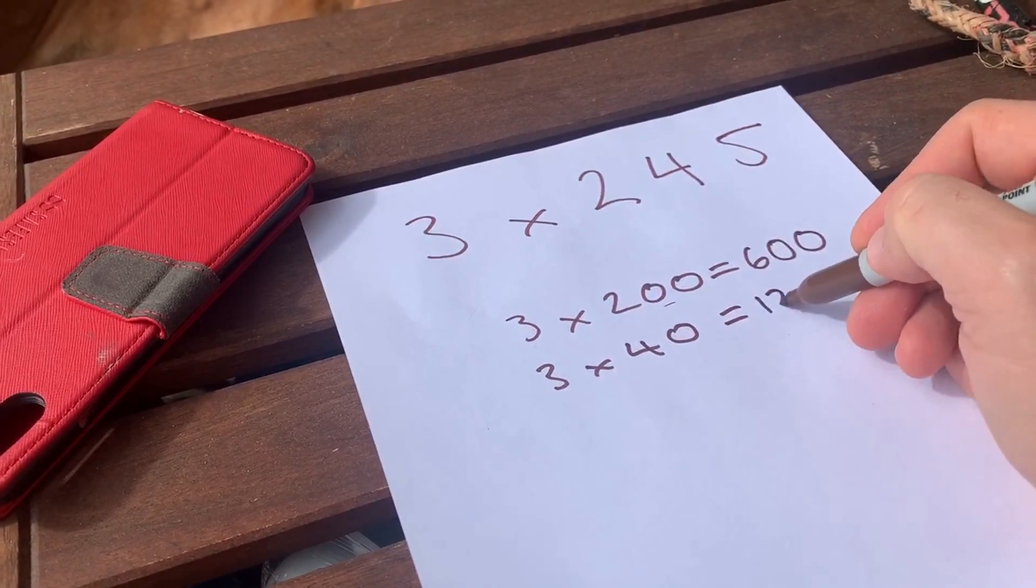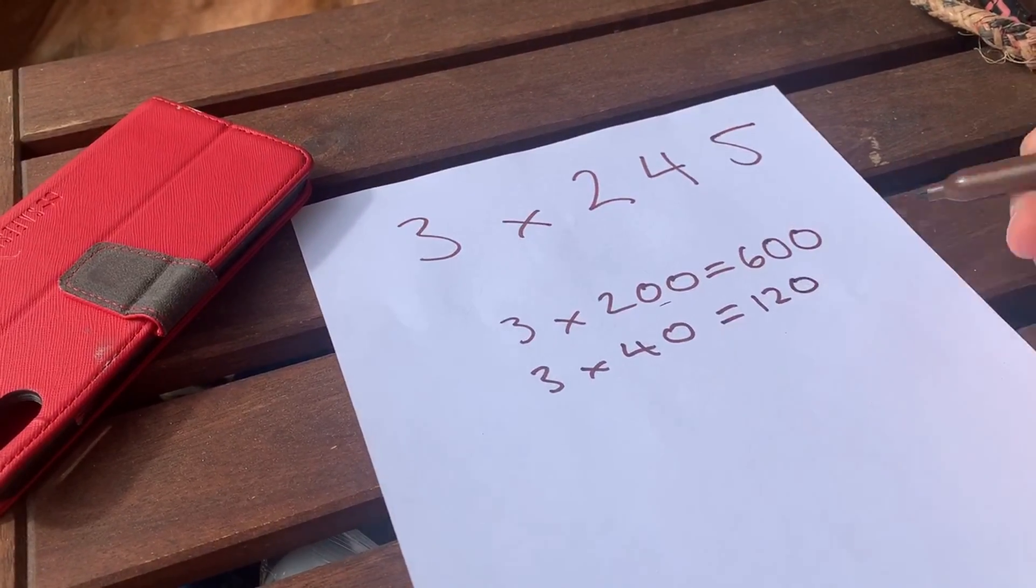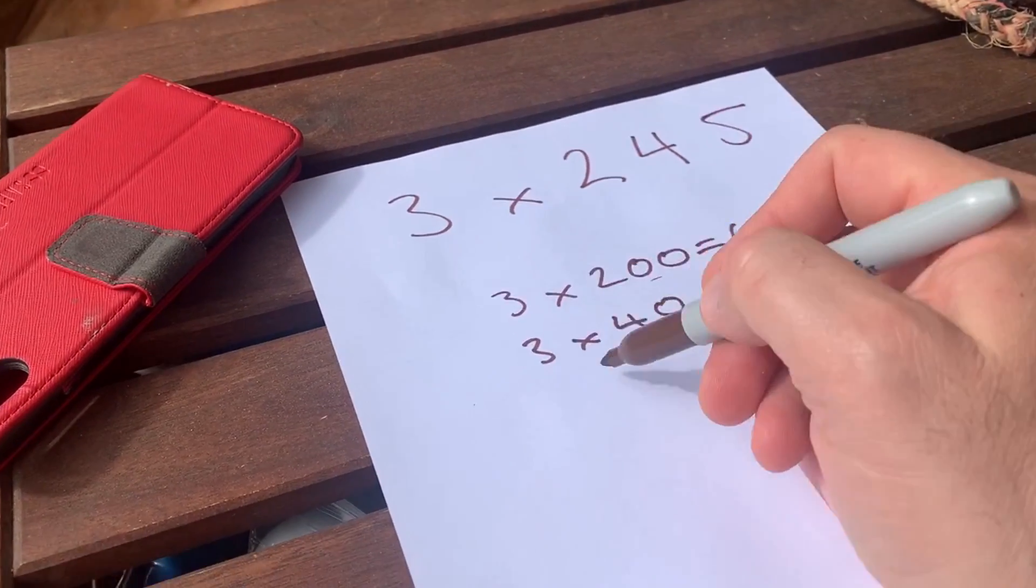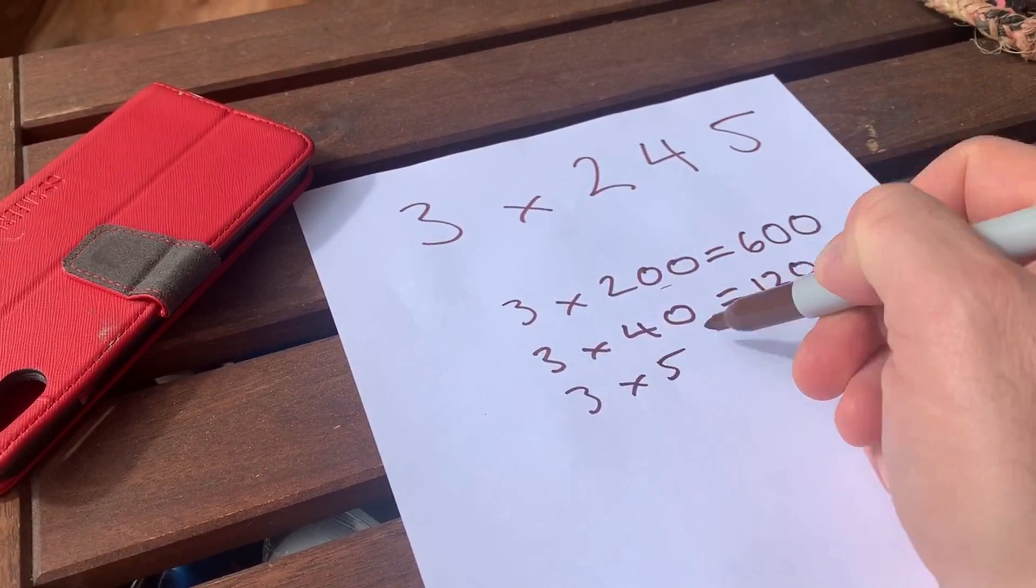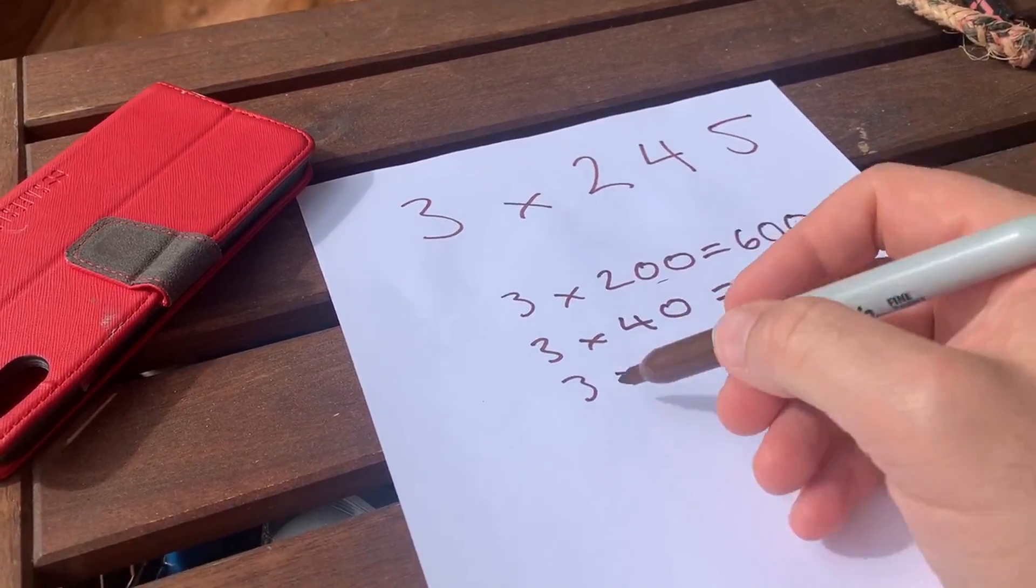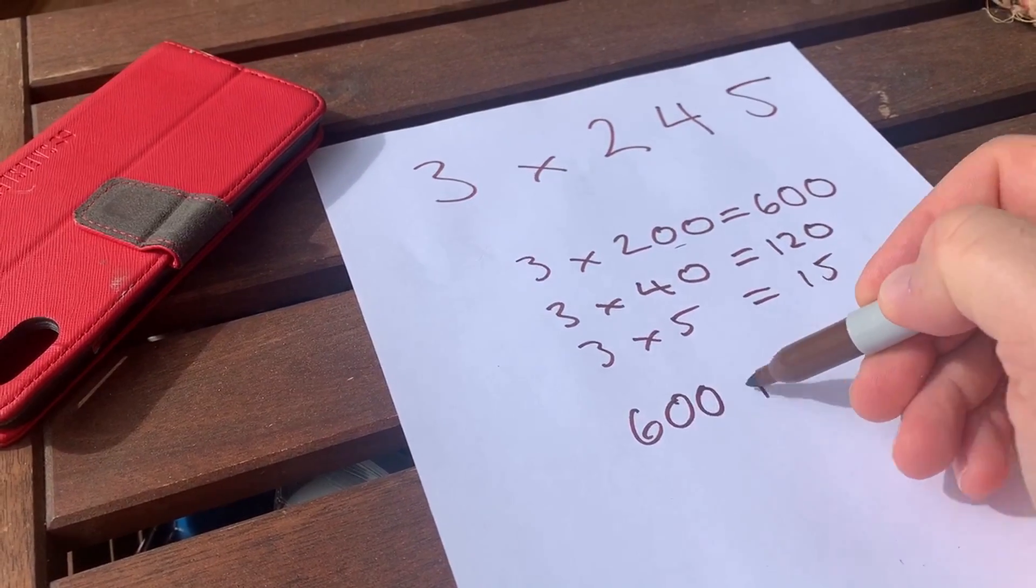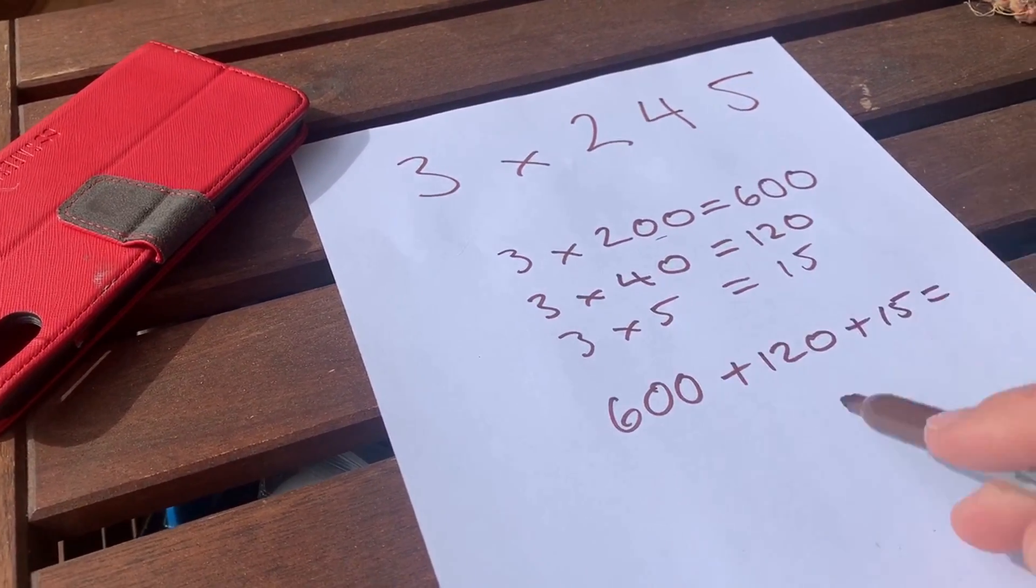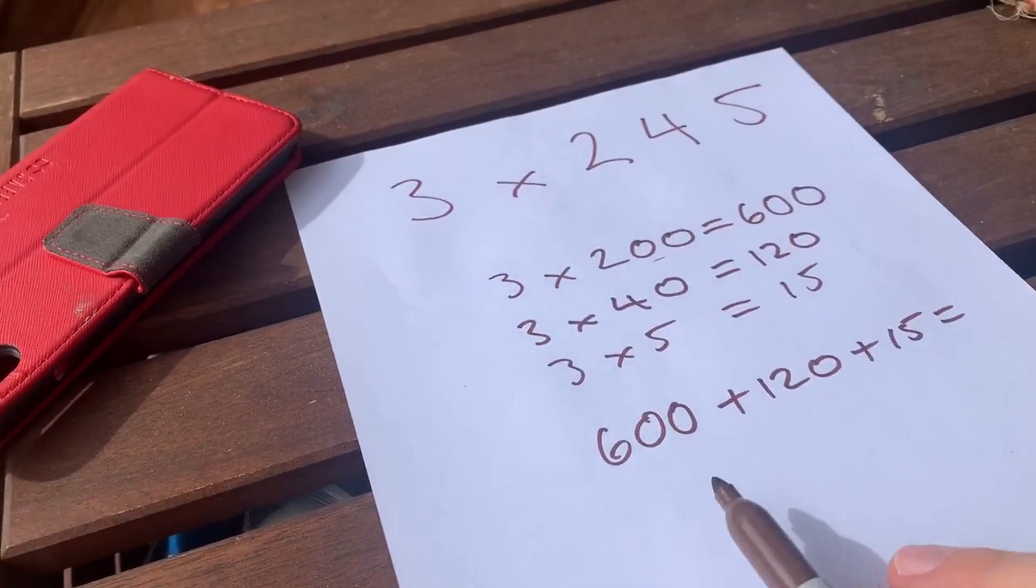3 times 4 is 12, and I bang my 0 on the end, so it's 120. And my last one is 3 times 5, and that's just, 5 is in the ones column, so it's just a regular old 3 times 5, which is 15.